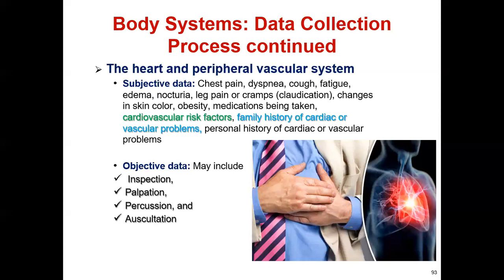What is objective data? After examining the patient, what we see, what we observe, what we feel, what we touch or measure — including vital signs — everything is included in objective data. When we collect objective data, we go through inspection, palpation, percussion, and auscultation.